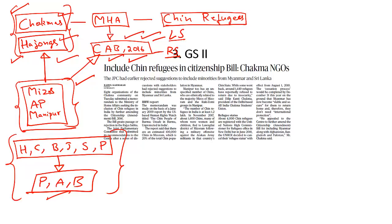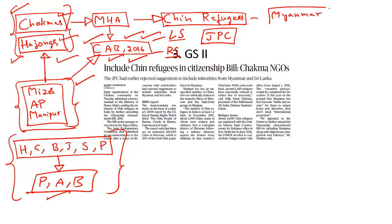Since many political parties have withdrawn support for the Citizenship Amendment Bill, a joint parliamentary committee has been set up to review its provisions. The Chakmas have now petitioned the Ministry of Home Affairs to also include the Chin refugees from Myanmar under the Citizenship Amendment Bill.